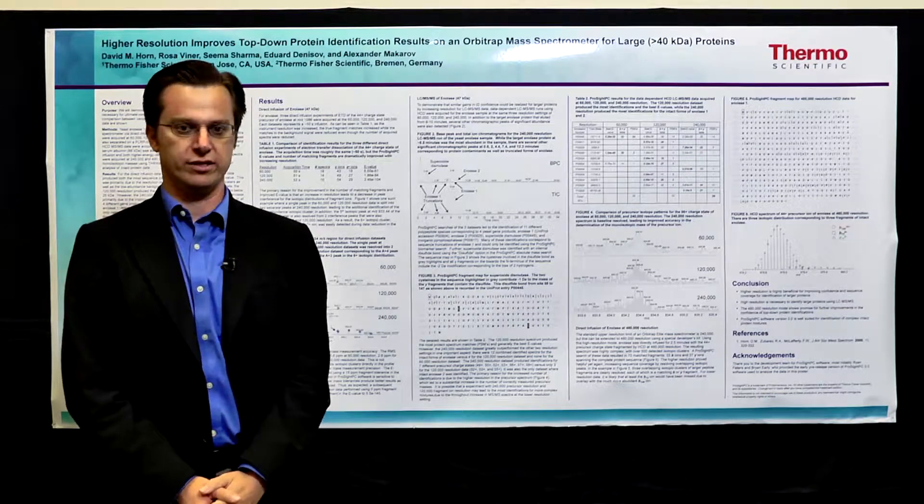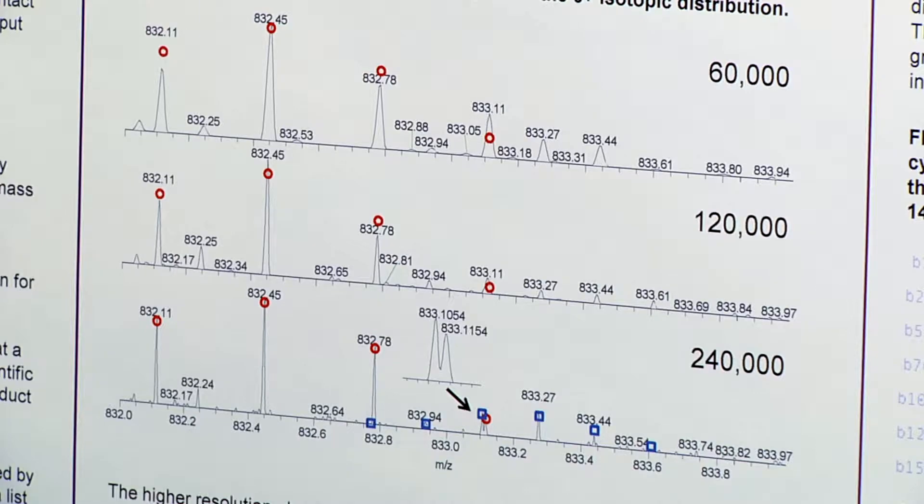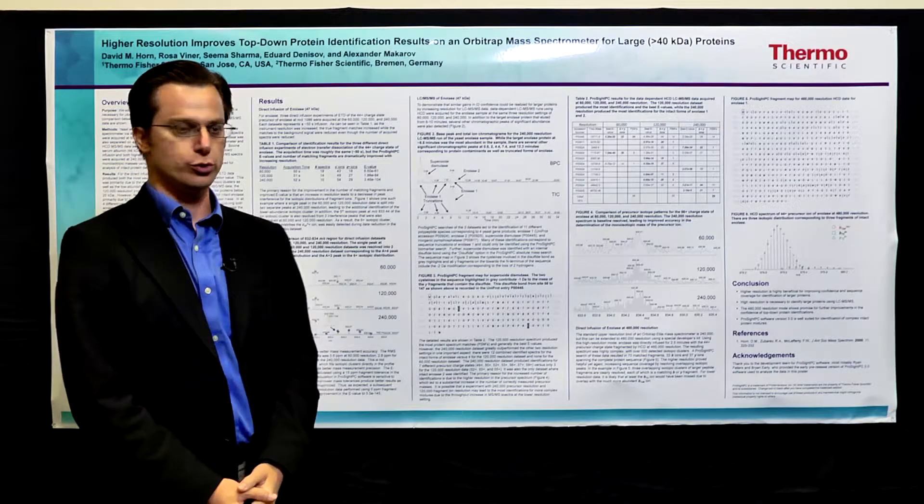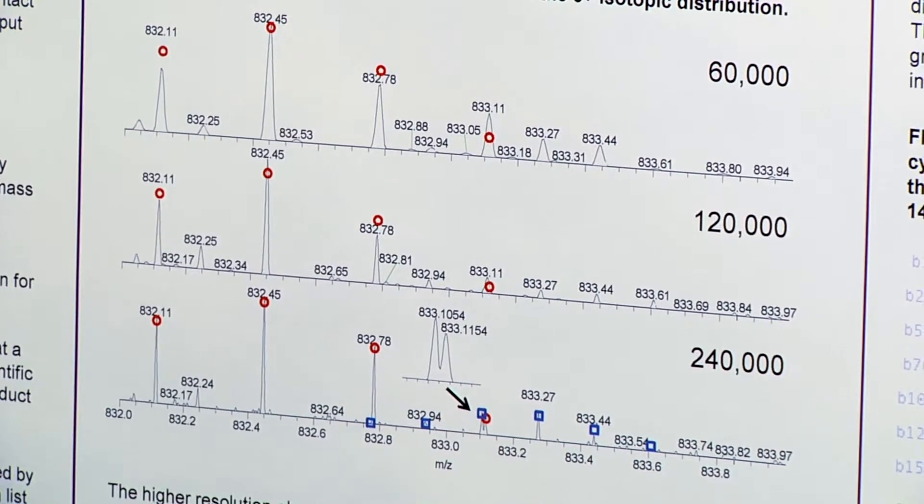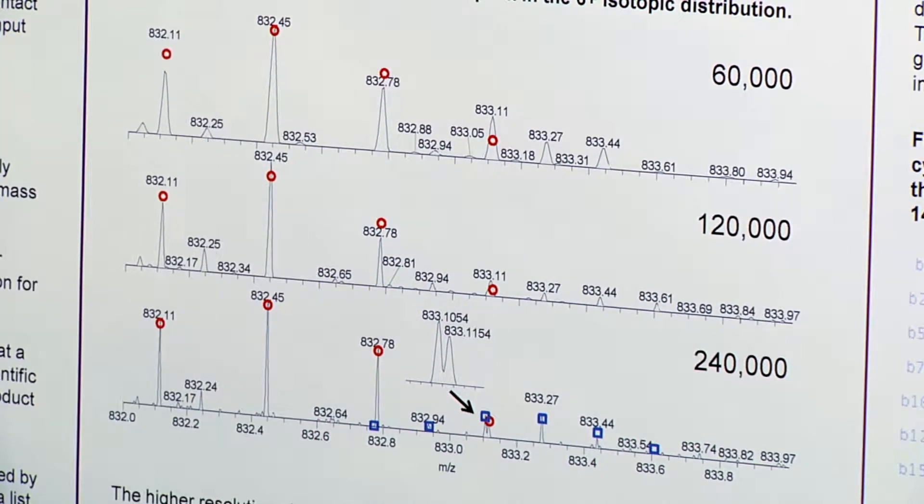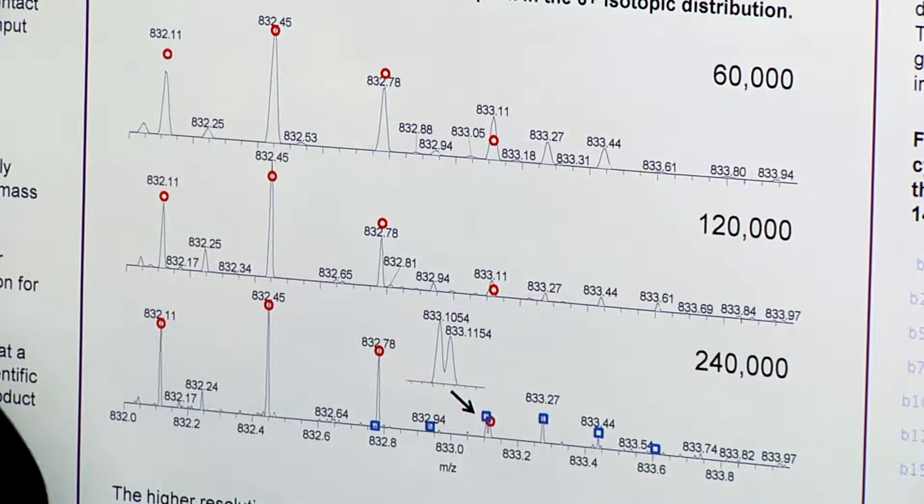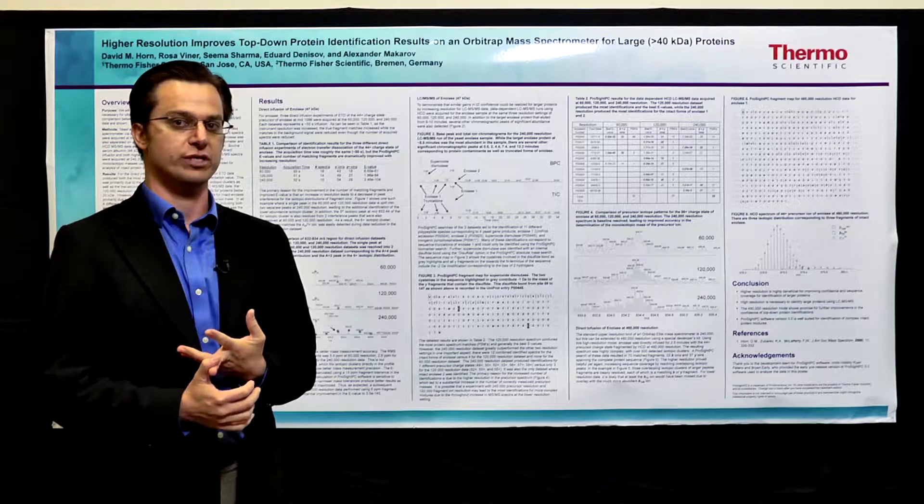The reason why the result got that much more confident can be shown in this figure right here. Only at 240,000 resolution could these two signals for two different fragment ions be separated. There was one very specific peak right there where the isotope separated into two peaks and then we could detect both of those fragment ions, improving sequence coverage and confidence even more.